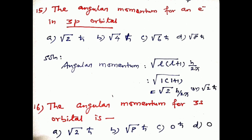Question number fifteen: the angular momentum for an electron in a 3p orbital is dash. The formula for angular momentum is √[l(l+1)] · h/2π. For a p orbital, l = 1. So: √[1×(1+1)] · h/2π = √2 · h/2π = √2 · ℏ. Therefore option a, √2 · ℏ, is the correct answer.